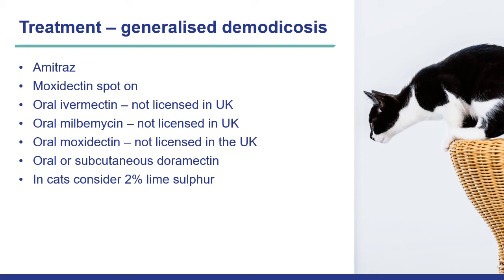Traditionally, treatment of generalised demodicosis consists of several molecules — some licensed such as amitraz dips and moxidectin spot-on, and others non-licensed such as oral ivermectin, oral milbemycin, oral moxidectin, subcutaneous doramectin, or in cats 2% lime sulfur. The advent of new molecules has now changed the landscape with very effective and easy treatment for this condition.